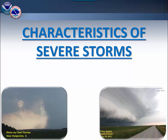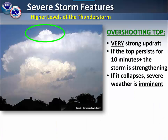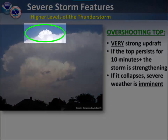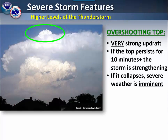Here are a few characteristics of severe thunderstorms. If you look in the higher levels of the thunderstorm, one item to watch for is what we call an overshooting top. This indicates a very strong updraft. Watch for the amount of time that it lasts. If it persists for at least 10 minutes, that's an indication that the storm is strengthening.